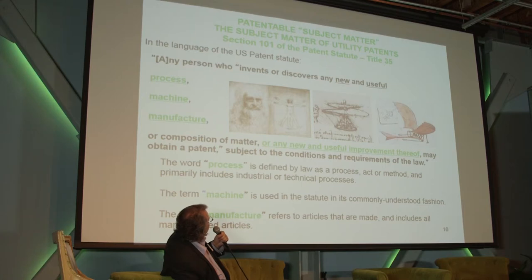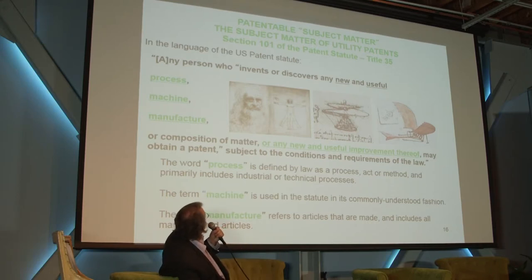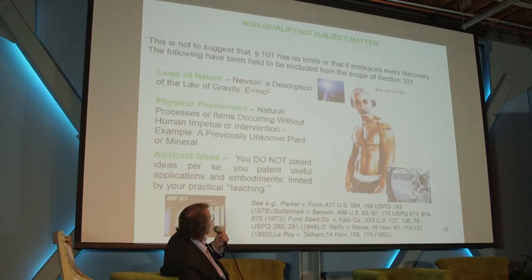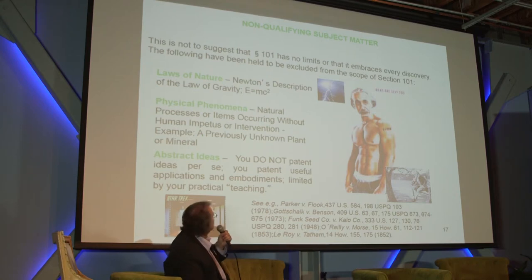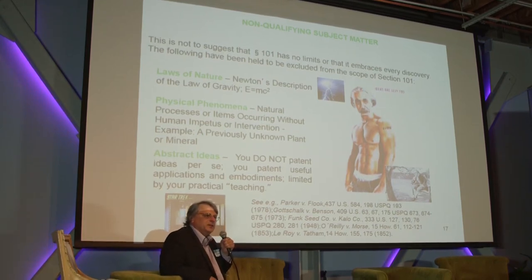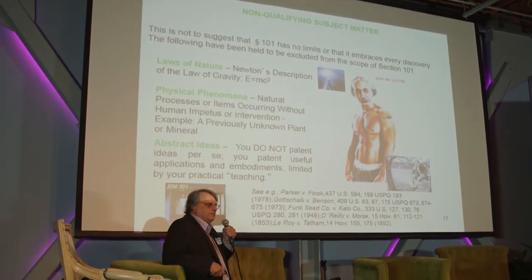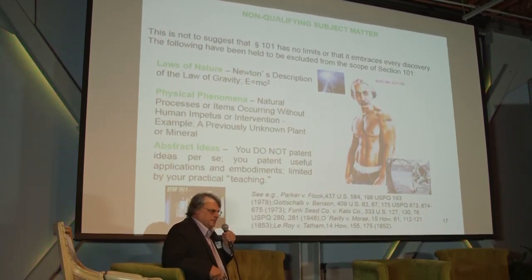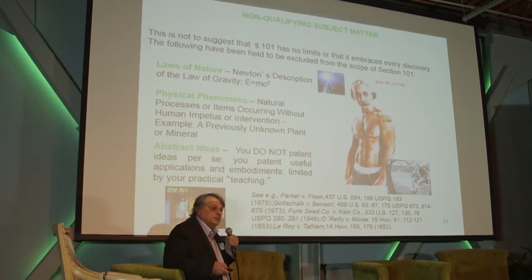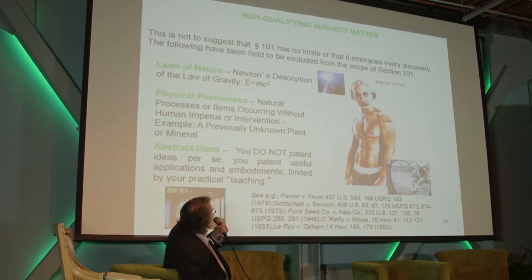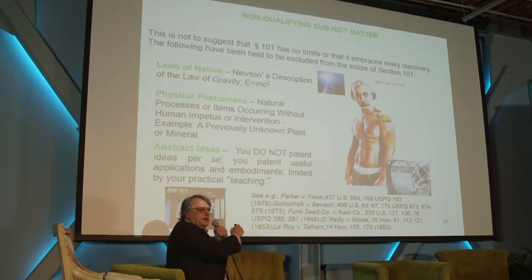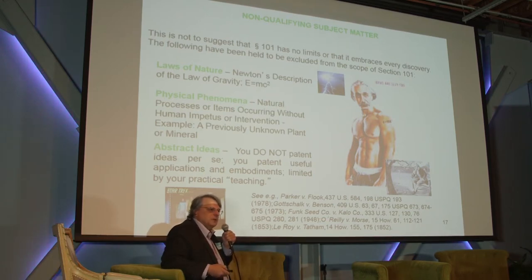Utility patents go on any new and useful machine, process, manufacture, or improvement. What we're not supposed to cover are laws of nature — such as Newton's laws of gravity or E=MC² — physical phenomena such as plants and minerals that were unknown before, and abstract ideas. Einstein couldn't get a patent on E=MC², but if you embodied it in a useful device, that is a patentable invention. This is where software patents get hairy — we see a lot of applications that look like they're claiming math, simple algorithms, or hedging funds.